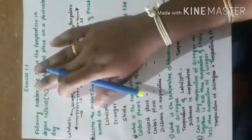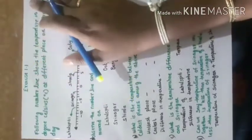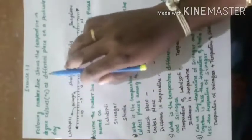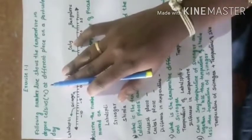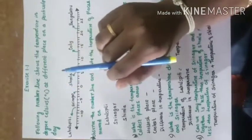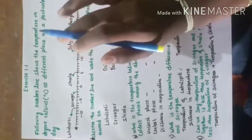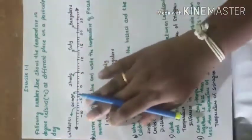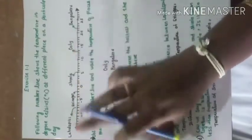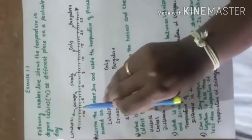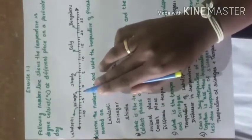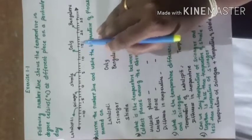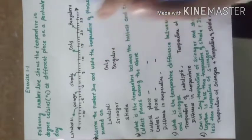Hi students, let us study about Exercise 1.1 of integers. The following number line shows the temperature in degrees Celsius at different places on a particular day. On the number line: Lahul Spithi is minus 8 degrees Celsius, Srinagar is minus 2 degrees Celsius, Shimla is 5 degrees Celsius, Ooty is 14 degrees Celsius, and Bangalore is 22 degrees Celsius.